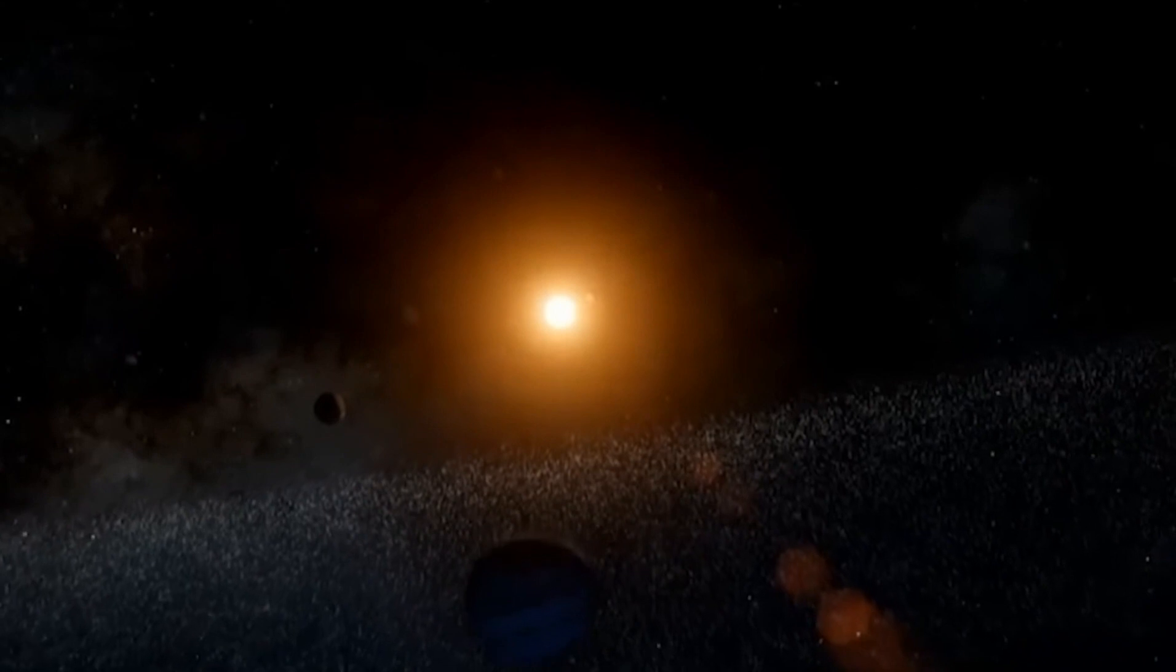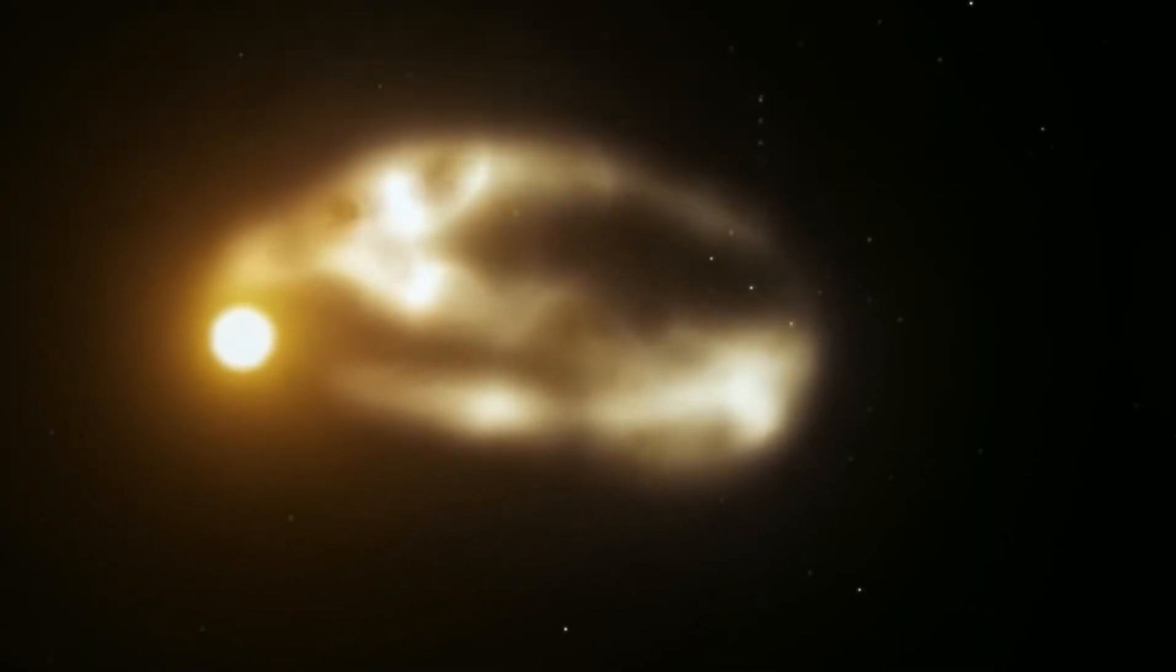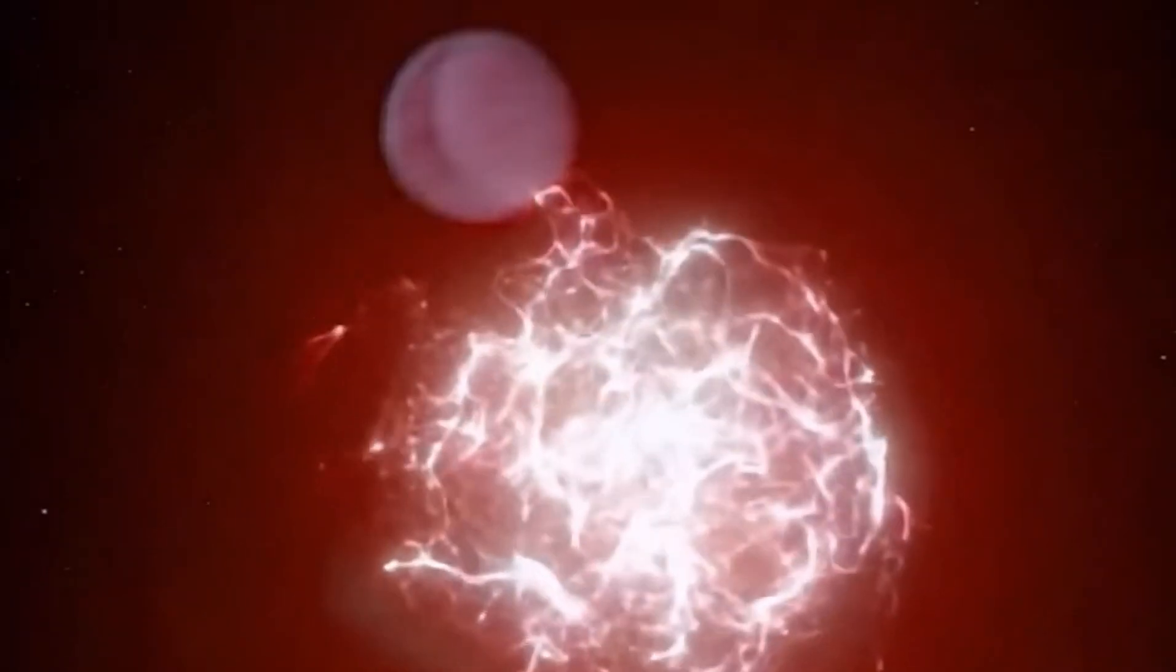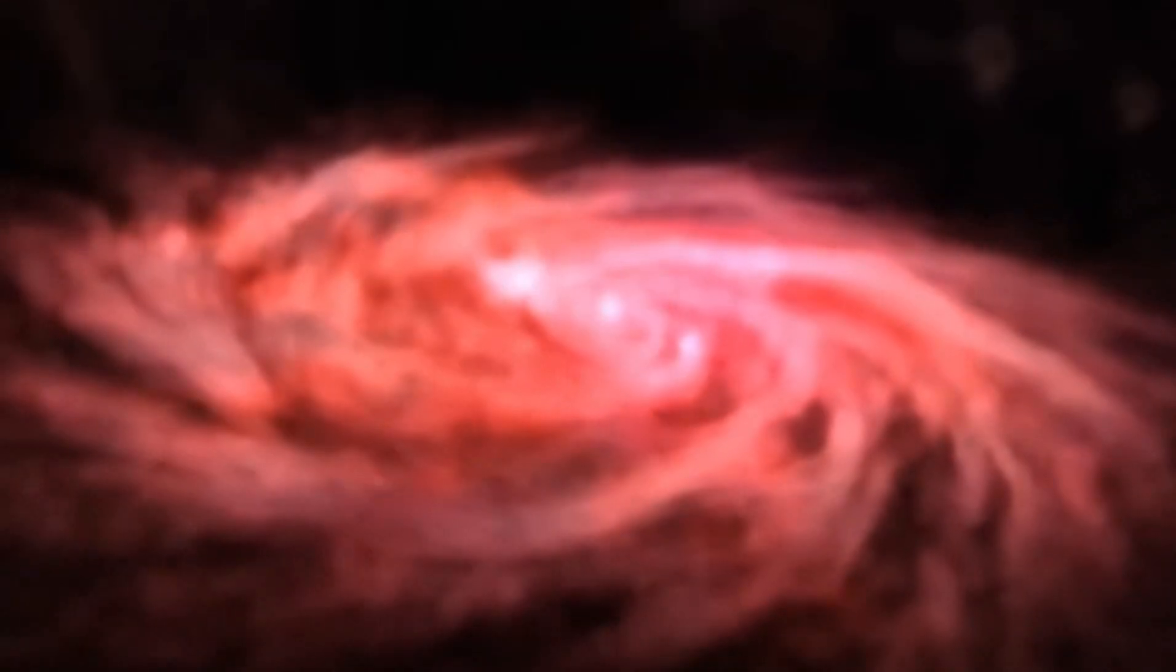Scientists estimate that if Betelgeuse was as close to us as Capella, which would be a total difference of 43 light-years only, then Earth would be exposed to very powerful electromagnetic ray bursts, which would wipe out the ozone layer.